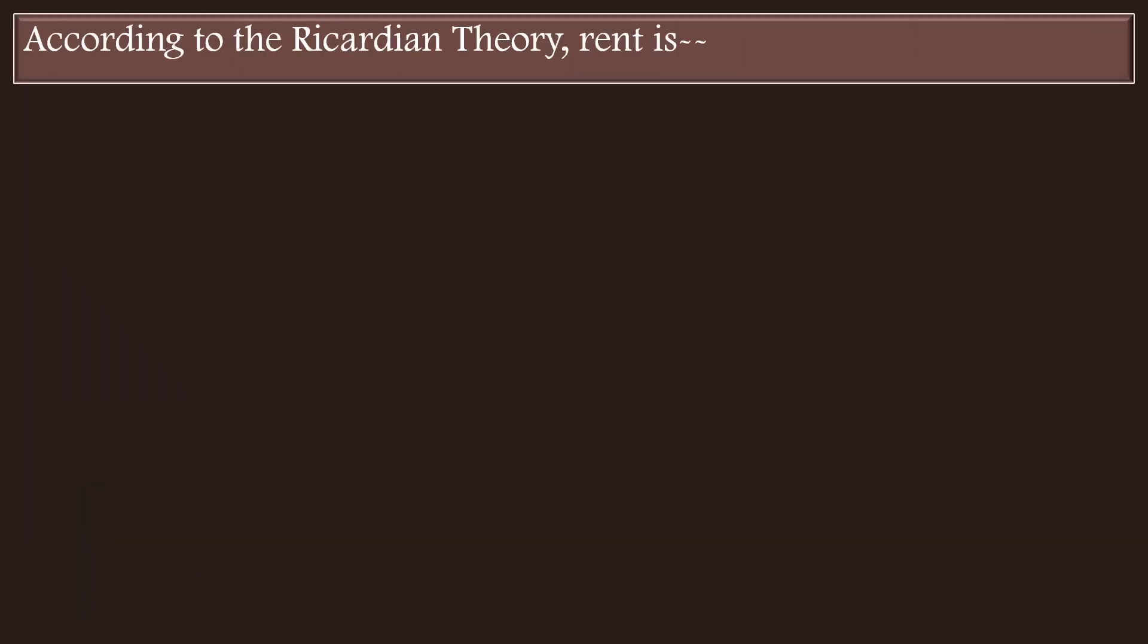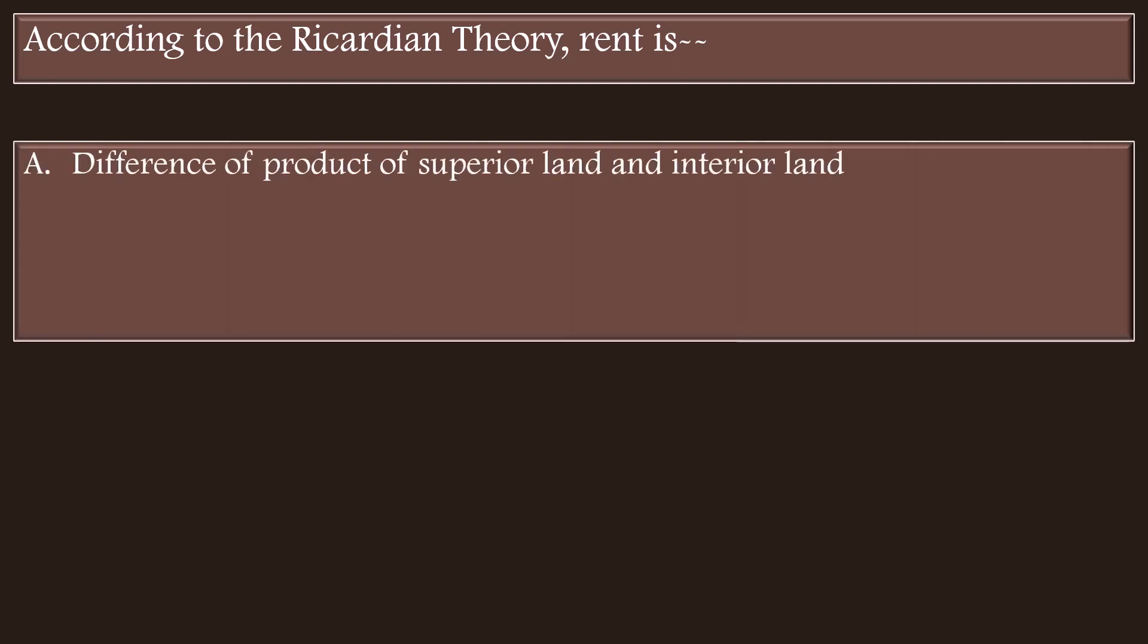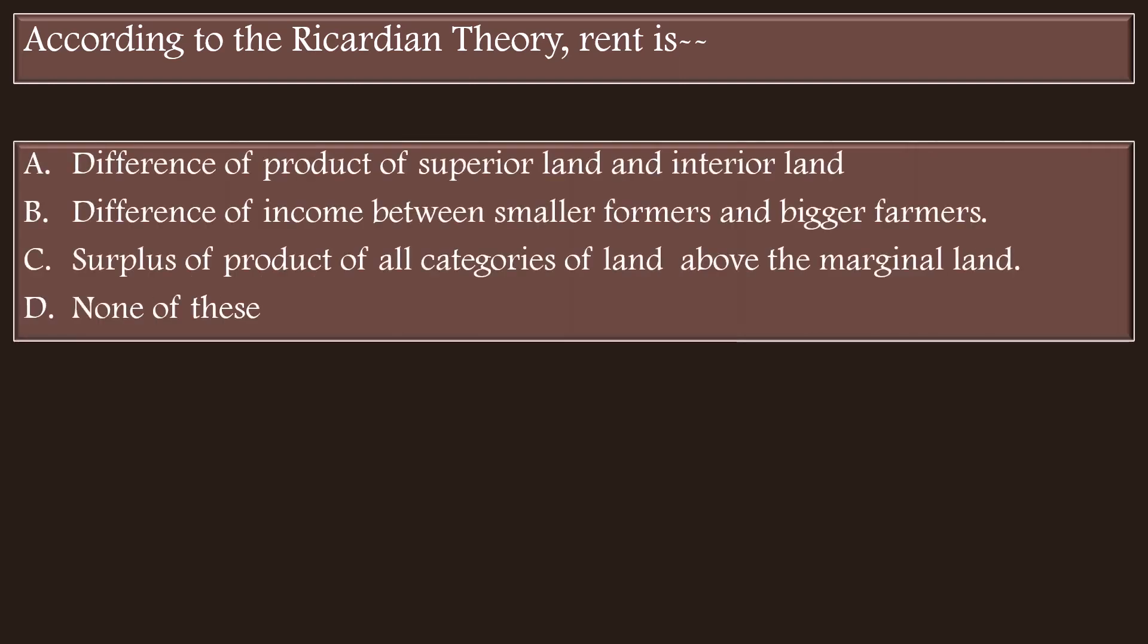According to Ricardian Theory, rent is: Option A - Difference of product of superior land and inferior land. B - Difference of income between smaller farmers and bigger farmers. C - Surplus of product of all categories of land above the marginal land.